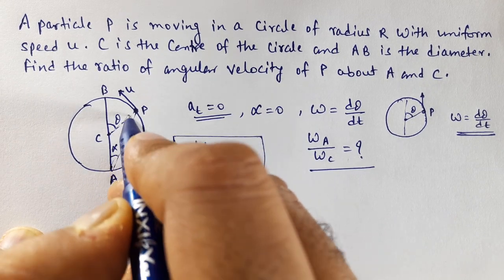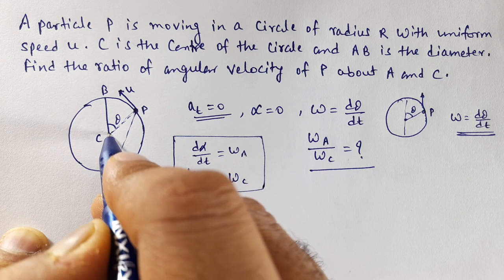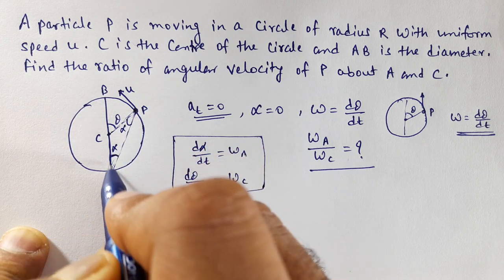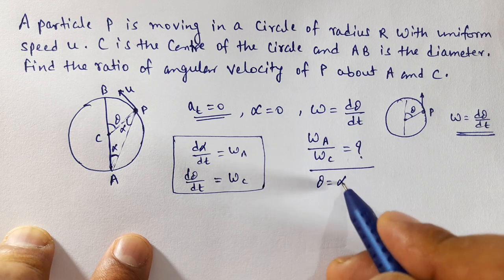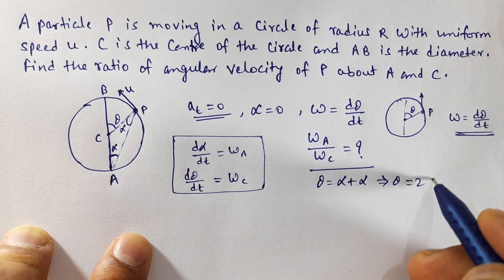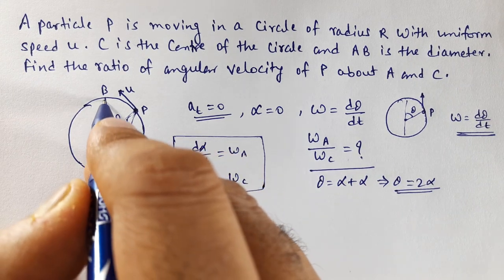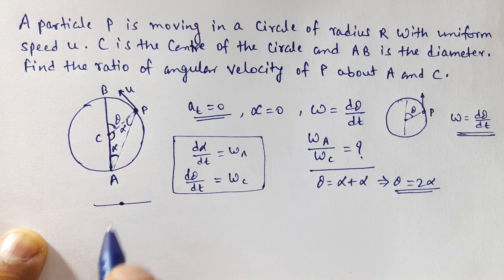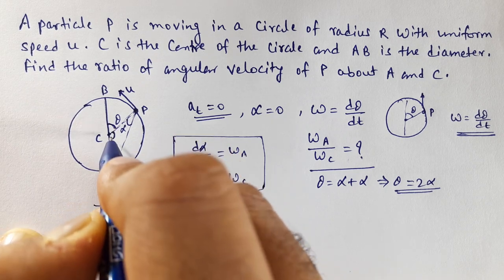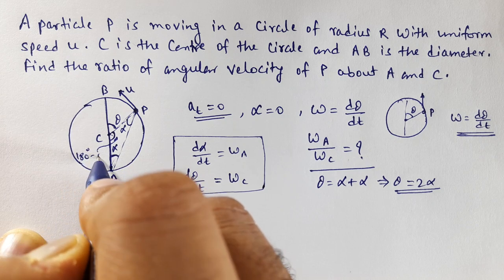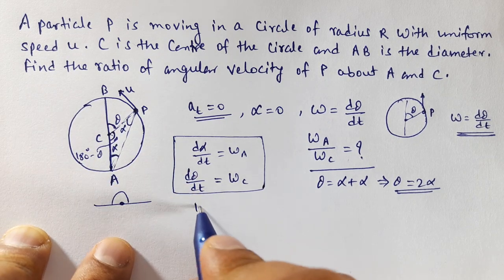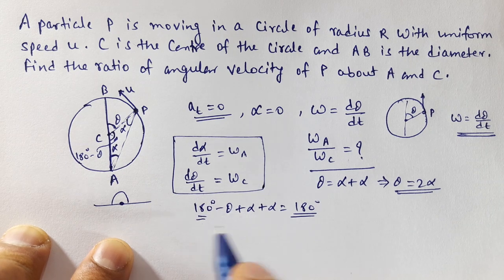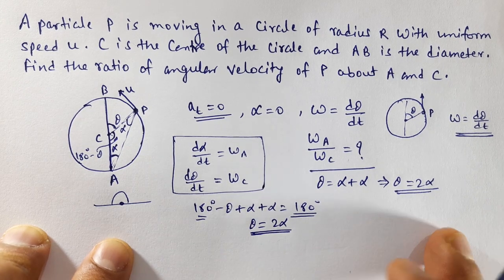Okay, so this angle is the external angle of triangle PAC. If this angle is θ, then this is 180° minus θ. The triangle's internal angle sum is 180 degrees. That means 180° - θ + α + α = 180°. So 180° cancels out, thus θ = 2α.